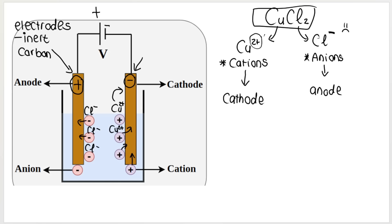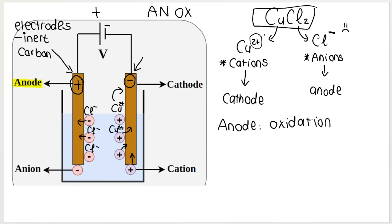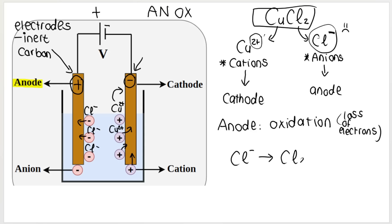Remember the cations. Let's start at the anode. Remember, the anions are attracted to the anode. The negative ions are attracted to the positive anode. What process takes place at the anode? At the anode — anox — oxidation occurs, so the oxidation half reaction takes place here. The substance that is being oxidized — oxidation is the loss of electrons — will be my Cl-minus ions. Cl-minus will lose electrons and form chlorine gas.